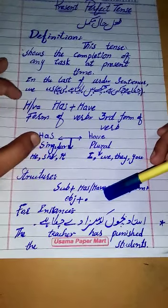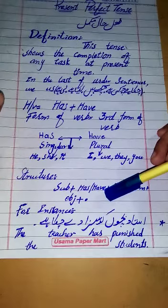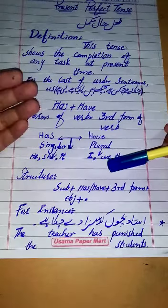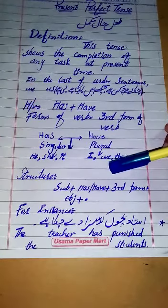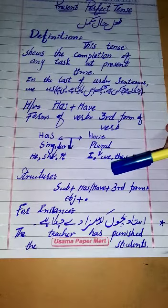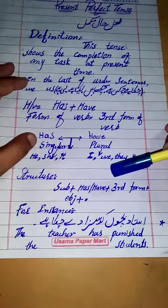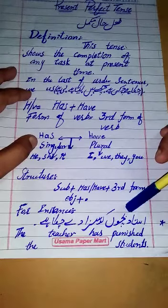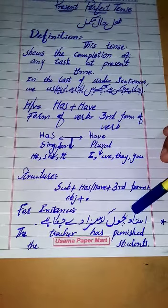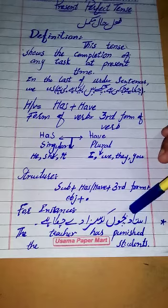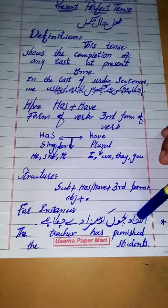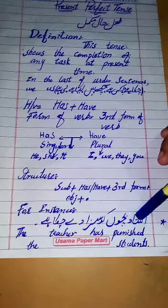Today we are doing simple sentences, and in the next video we will do negative sentences. As I told you, there are four types of sentences: simple, negative, interrogative, and negative-plus-interrogative. Today we are doing the first type — simple sentences. I have written some example sentences and will show you how to create them in English.